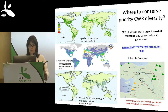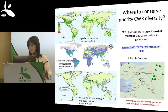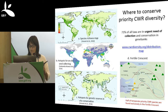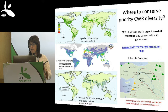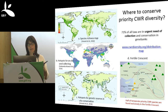Holly Vincent also used Marxan, a software for conservation planning, to plot hotspots for in situ conservation of priority crop wild relatives. A close-up of the Fertile Crescent reveals areas that must be conserved to underpin food security — half of all temperate priority crop wild relative species are found exclusively there, making it a critically important area for feeding the world in the future.